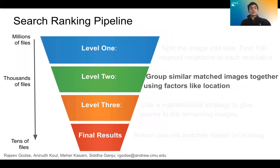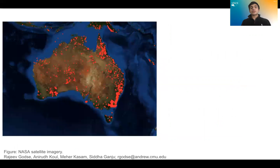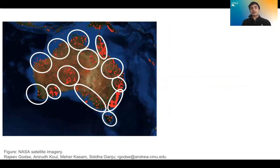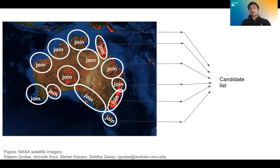Then we moved on to Level 2. Since many of the Level 1 matches will be in the same location, we can group those together to reduce the candidate set. If we join data points that are in similar geographic locations, we can further reduce the candidate list.